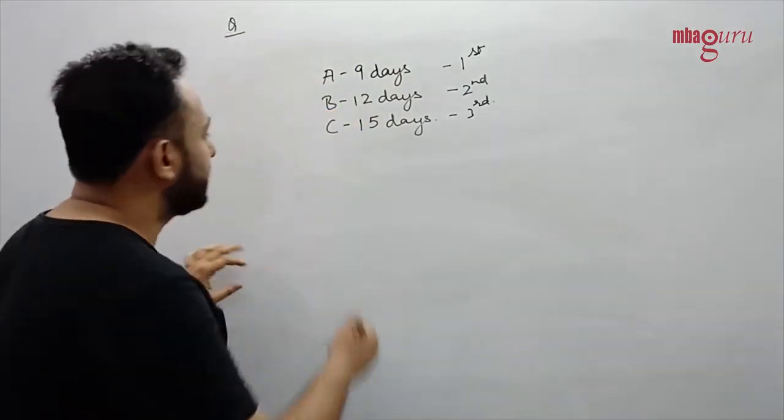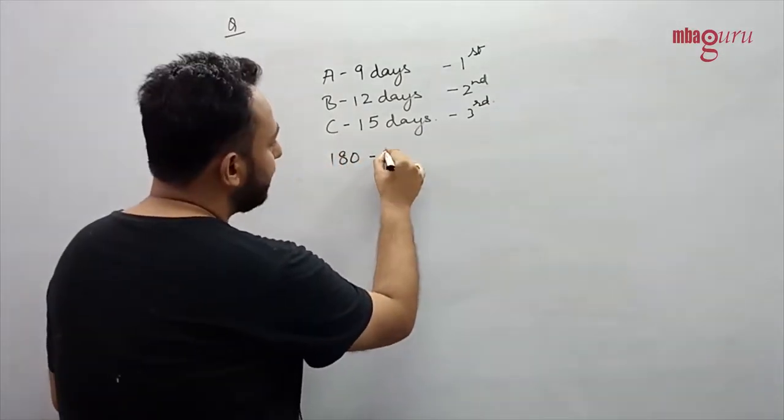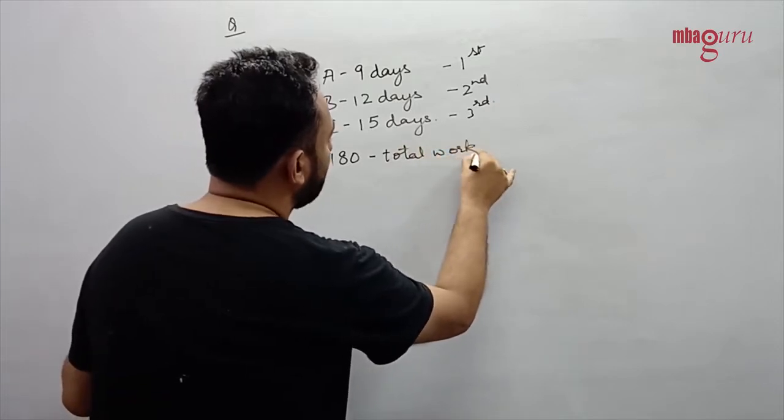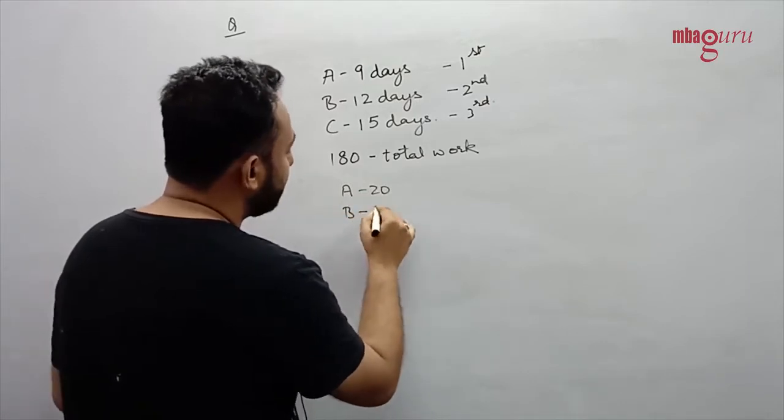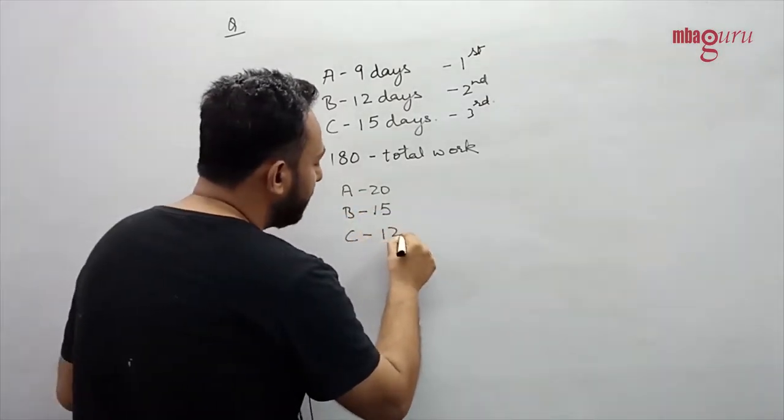Now 9, 12 and 15, LCM turns out to be 180 and that is what we will assume as total work. So efficiency of A turns out to be 20, efficiency of B turns out to be 15, and efficiency of C turns out to be 12.